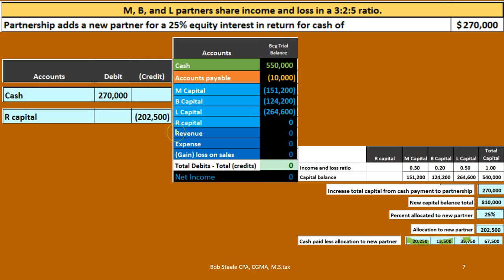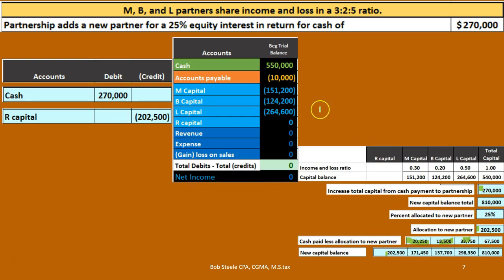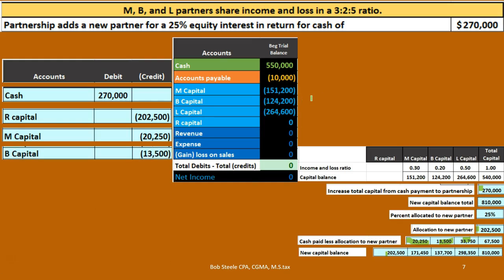Looking at the trial balance, we need to increase the capital account balances accordingly. R is going to be on the books for $202,500. M's capital account goes from $151,200 up by $20,250 to $171,450. In terms of a journal entry, to increase these credit balances we will credit them — $20,250, $13,500, and $33,750 to M, B, and L respectively — which increases their capital accounts.